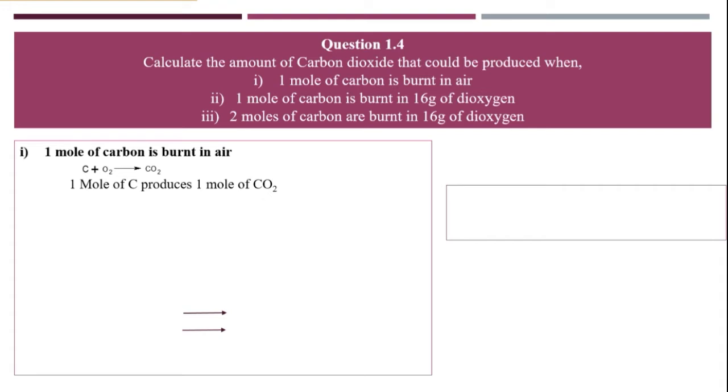When you calculate number of moles, the formula is given mass by molecular mass. So we don't know what the given mass is, but we know the number of moles and the molecular mass of carbon dioxide. Here the given weight is what we need to find out. So number of moles is one and molecular mass is 44, so our answer will be 44 grams, which is the amount of carbon dioxide produced.